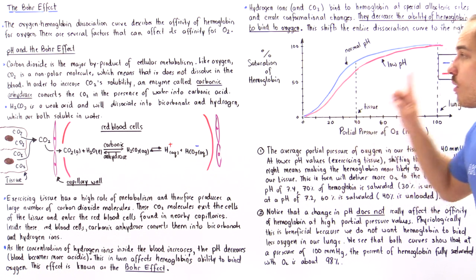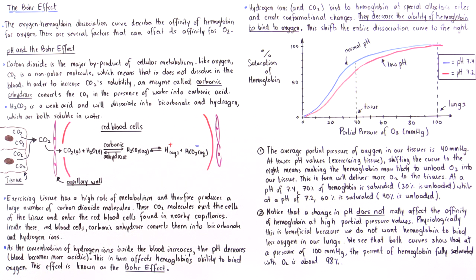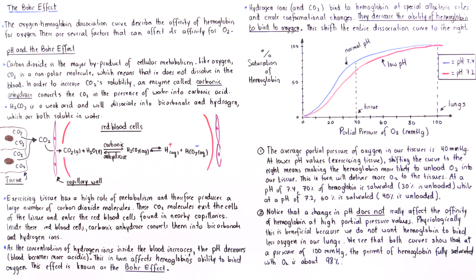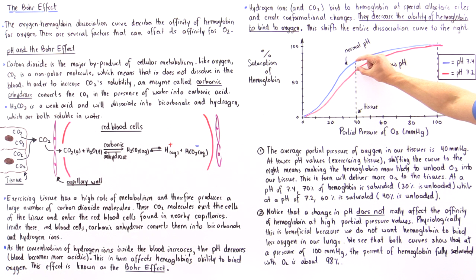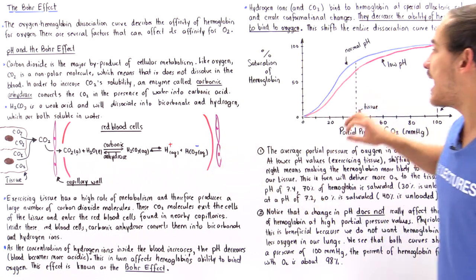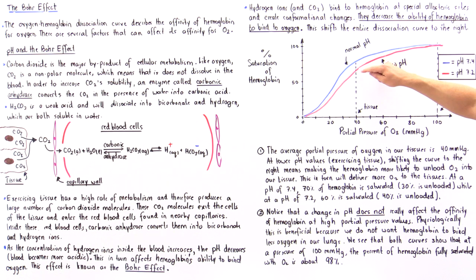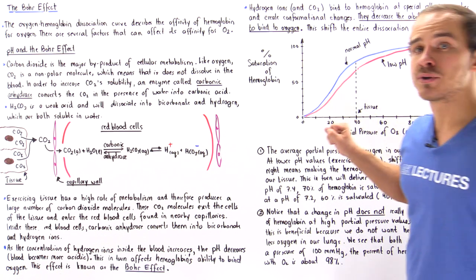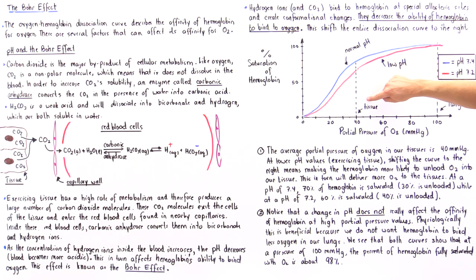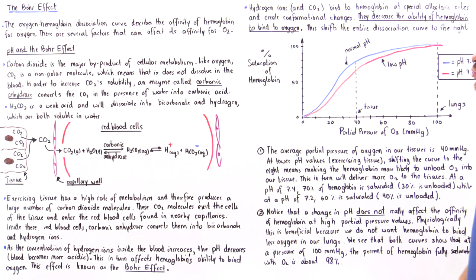Once hemoglobin brings that oxygen into the exercising tissue, this is where the Bohr effect really takes its place. We see a difference of about 10% in oxygen unloading in our tissue at a partial pressure of about 40 mmHg.